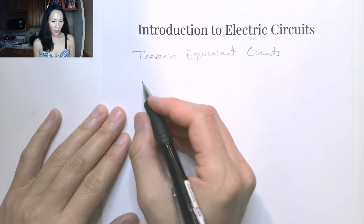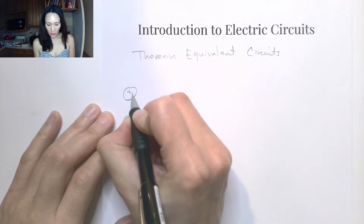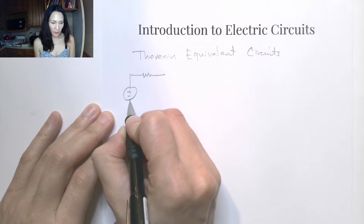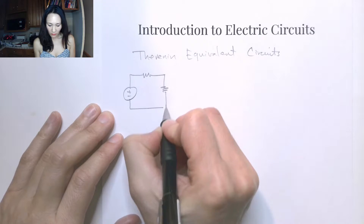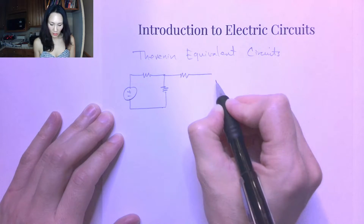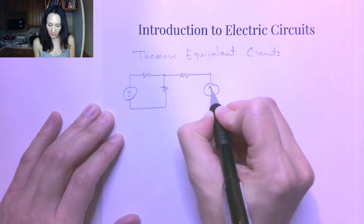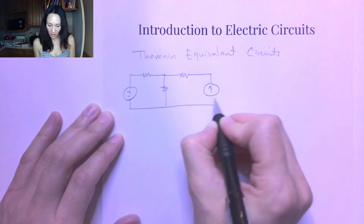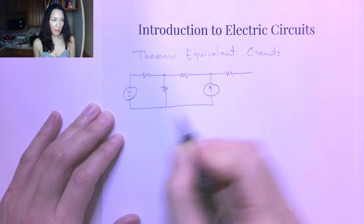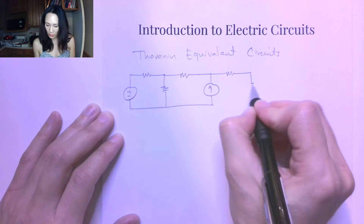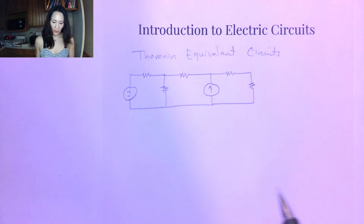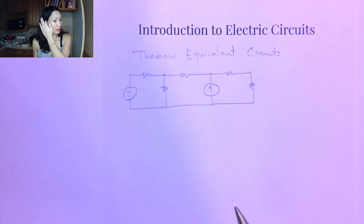Now I'd like to show you an example of how we would use Thevenin and Norton equivalents to do source transformations to solve a circuit. We've learned node voltage and mesh current methods. This is actually an independent method. It doesn't require finding our equivalent. We just have to basically sequentially do a bunch of source transformations until we simplify our circuit to just one resistor.